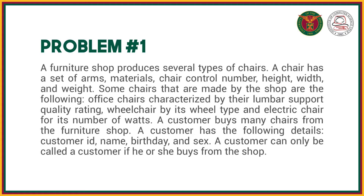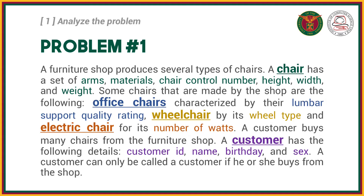Let's first identify our entities. We can identify chair as our entity. The shop also made different chairs, so we have office chair, wheelchair, and electric chair as entities as well. And we have customer as another entity. Let's try to draw that in our diagram.